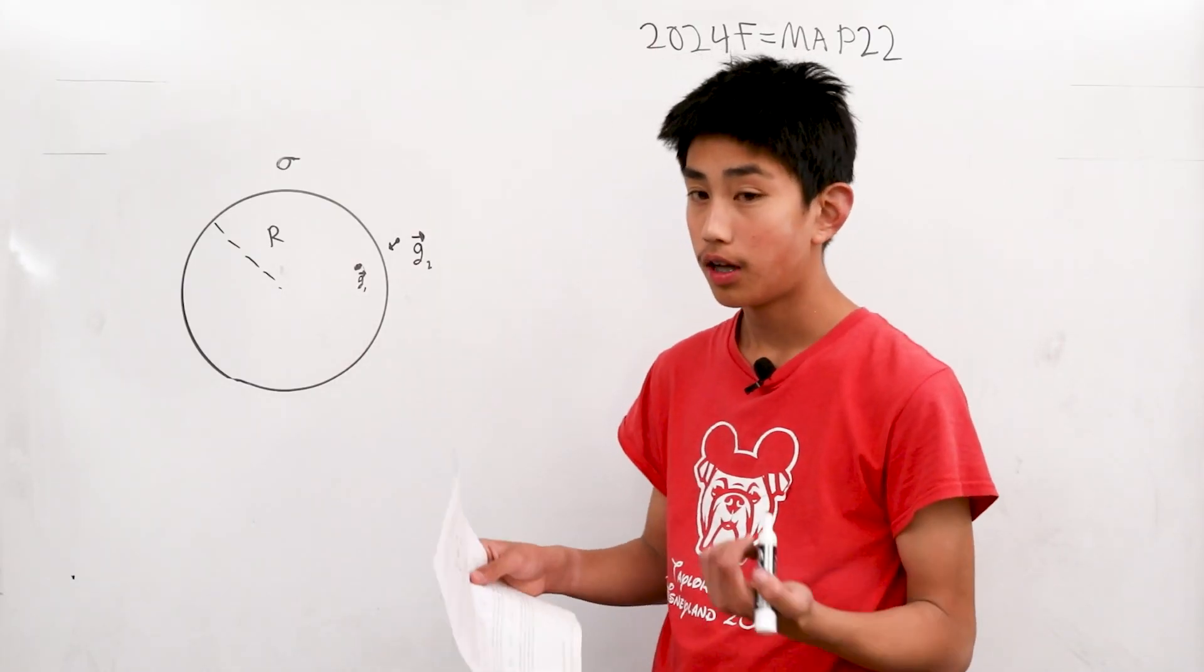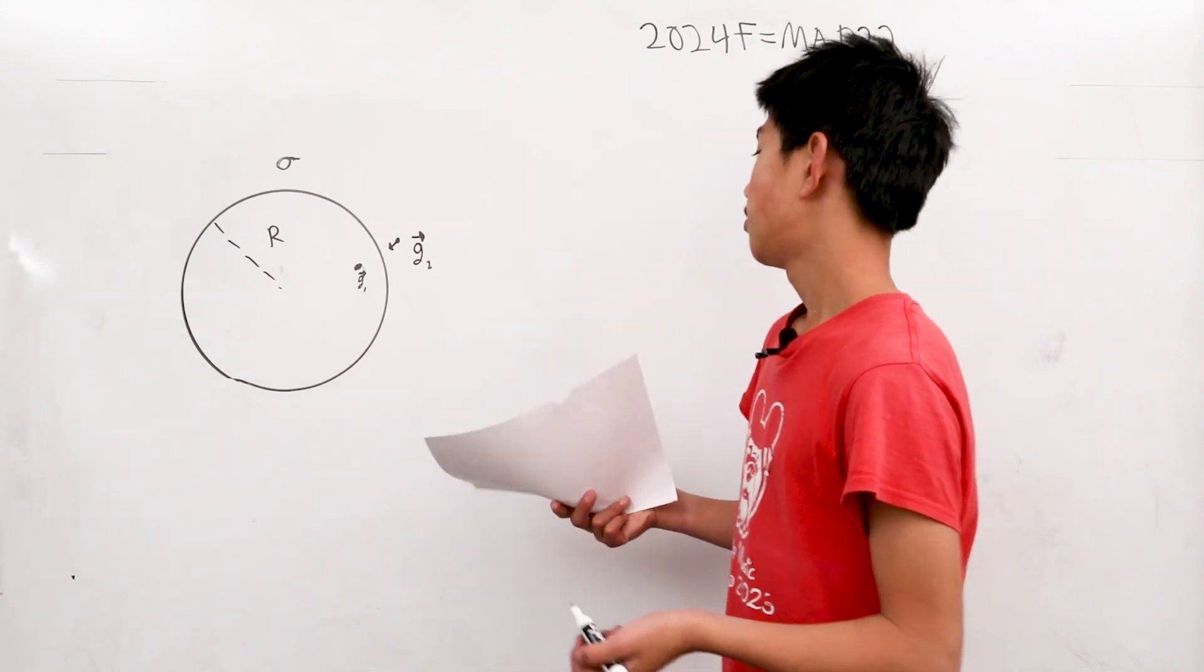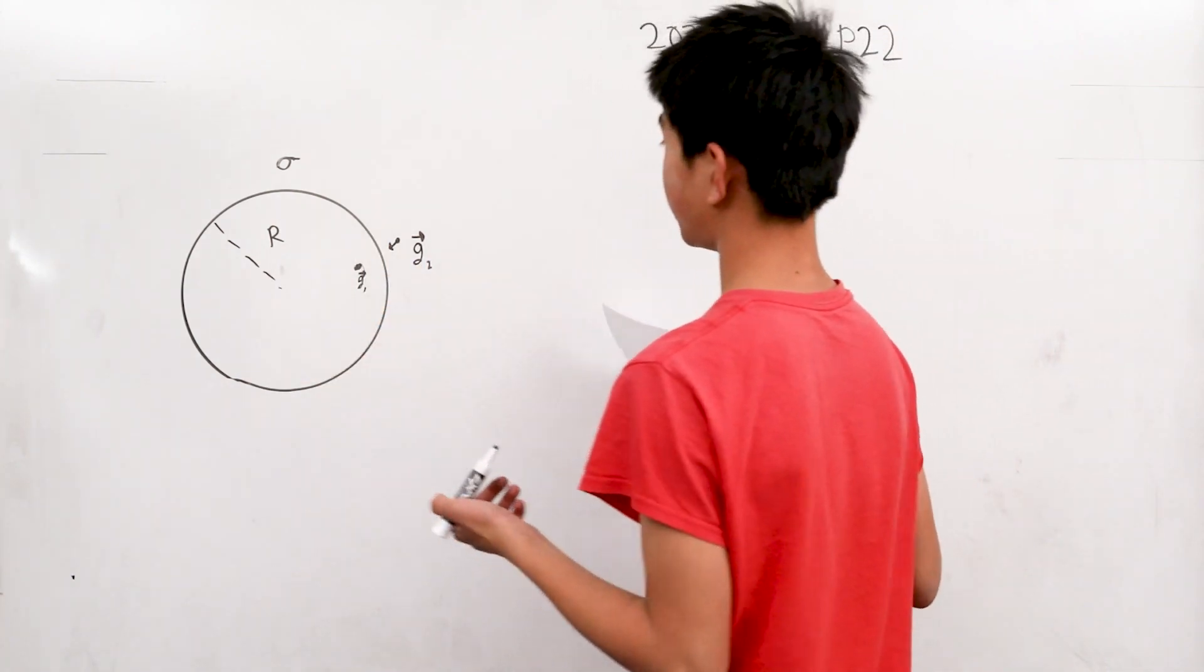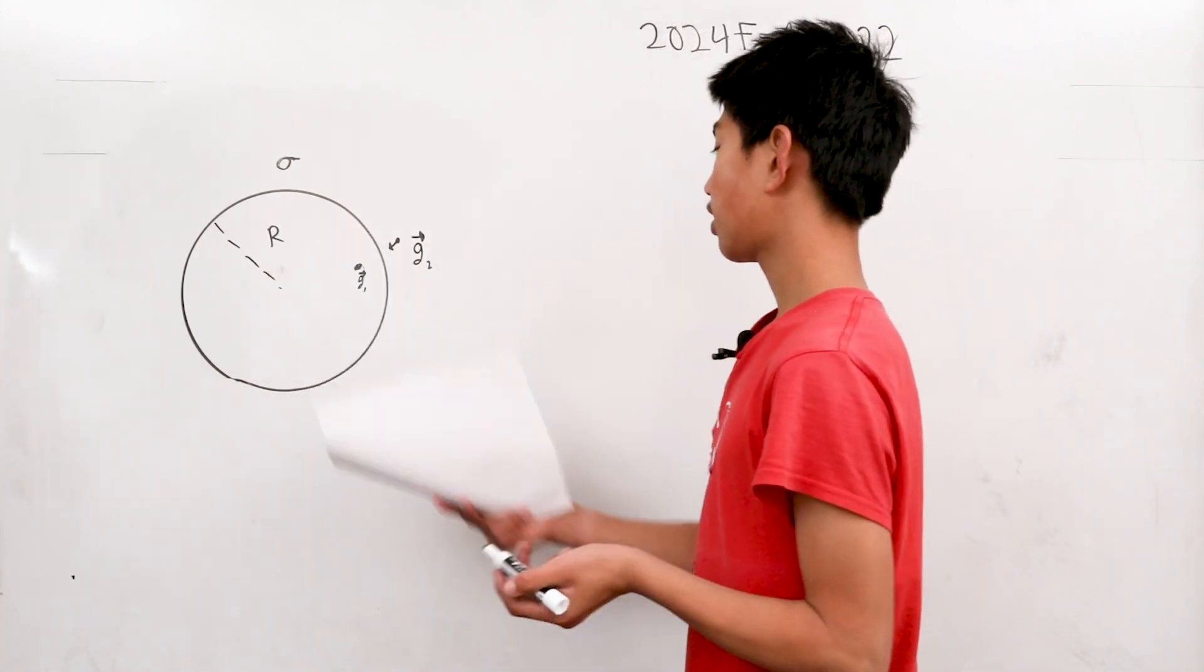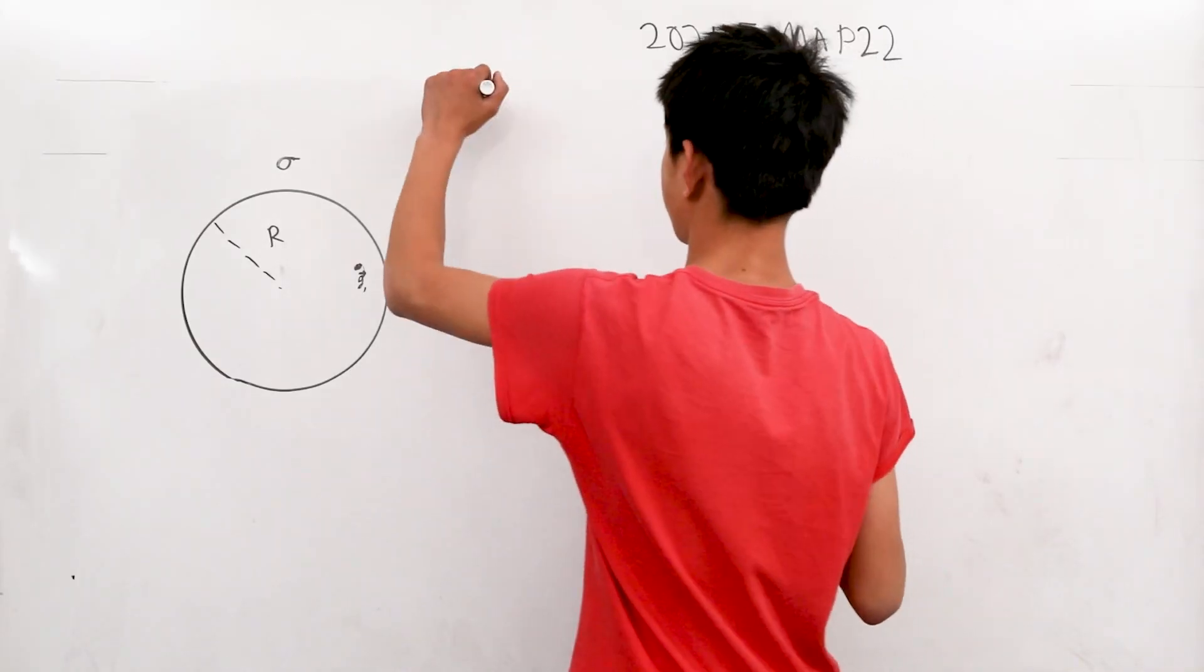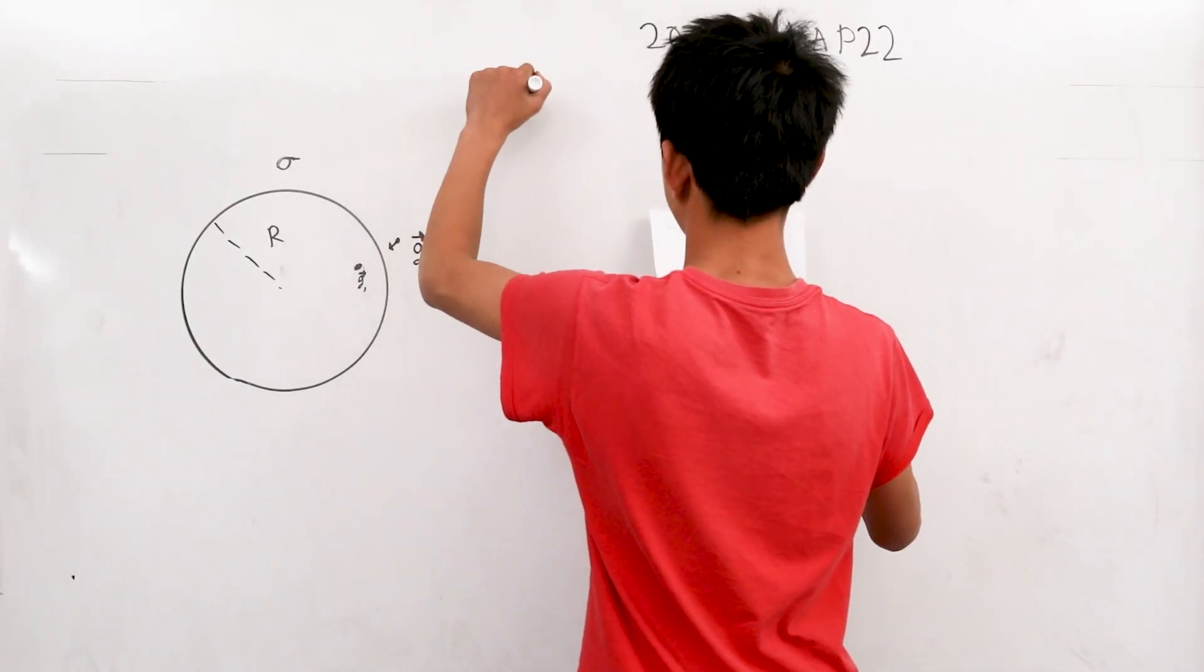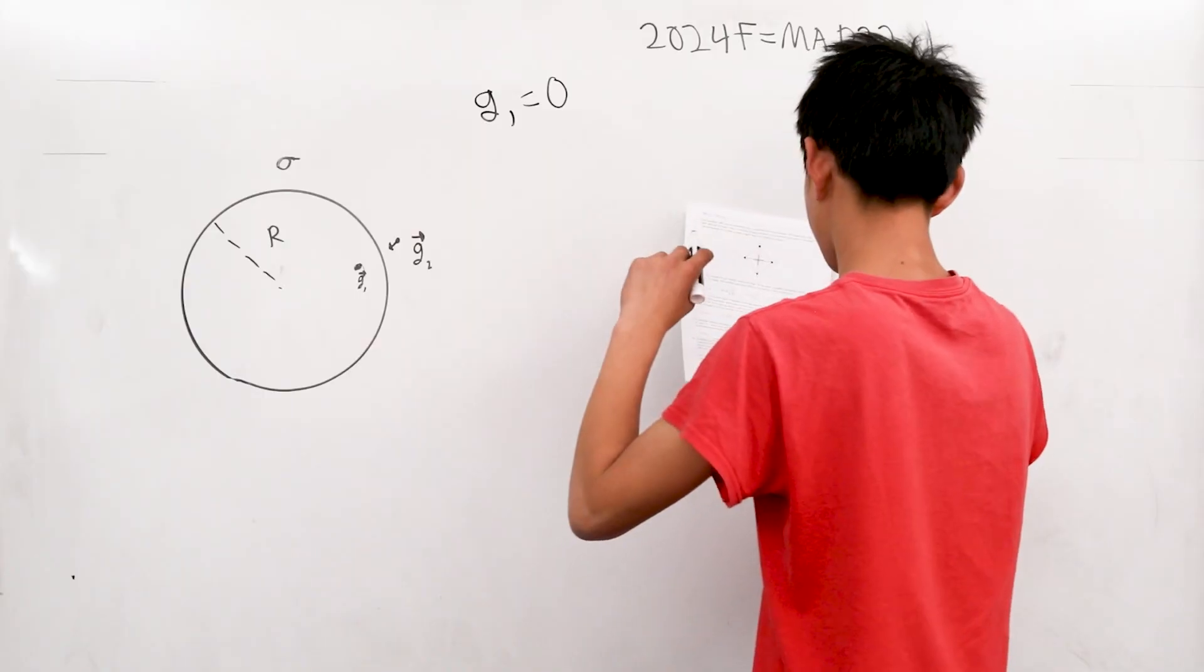Due to Shell Theorem, Shell Theorem states that any point inside a hollow sphere, not including the one at the center, basically has zero for gravitational acceleration.